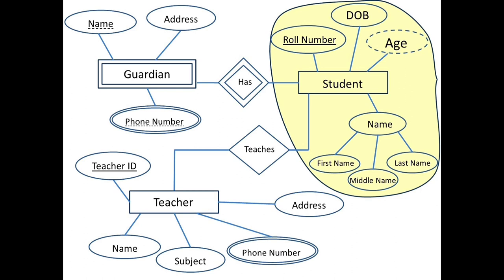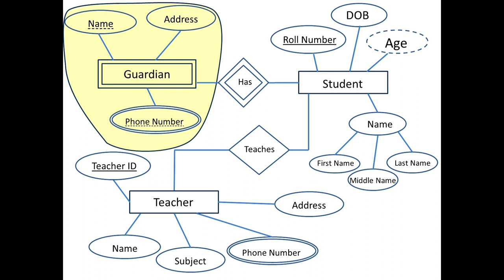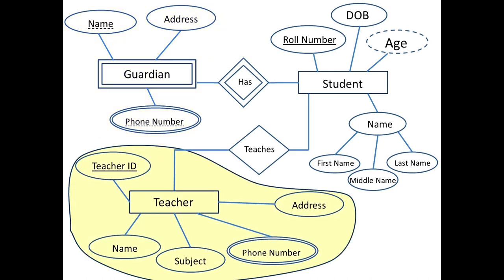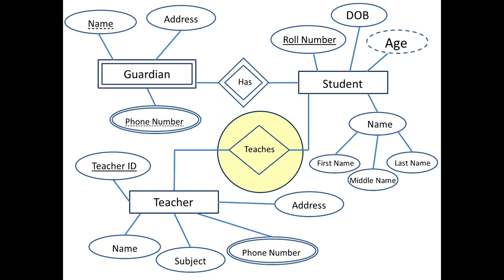Age is a Derived Attribute that can be calculated using DOB and System Date. For the Guardian Entity Set, Phone Number is a Multi-Valued Attribute, and Name and Phone Number form the Partial Key or Discriminator. For the Teacher Entity Set, Teacher ID is a Key Attribute, and Phone Number is a Multi-Valued Attribute. Teacher and Student Entity Sets are related through the Relationship Teaches, and Student and Guardian Entity Sets are related through the Relationship As.